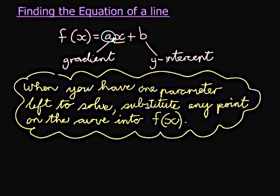Once we have the gradient, we'll use this idea to find the b-value. Because if we have a, we've got one parameter left to solve. All I need to do is substitute any point on the curve into my function where my a is already found.